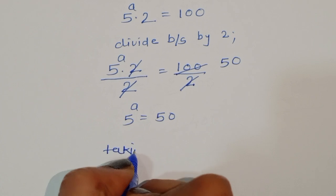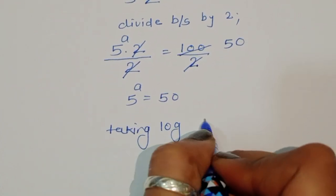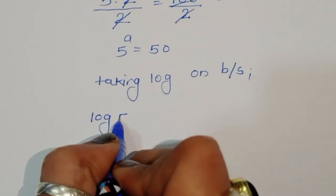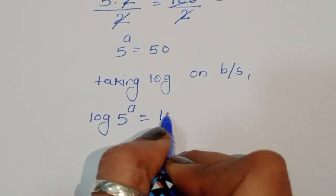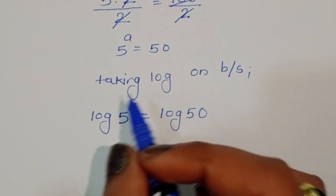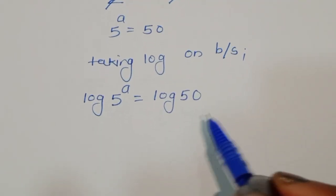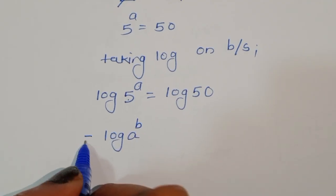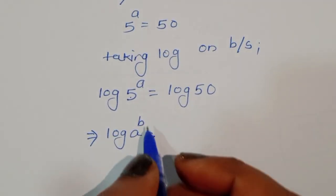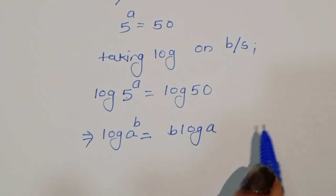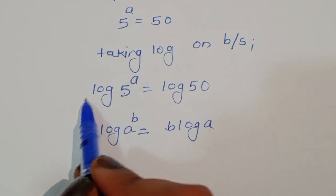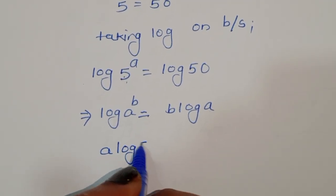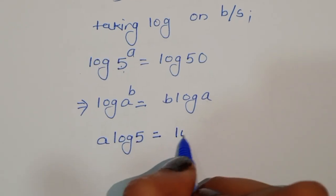Now we have to find the value of a, so we are using the log method — taking log on both sides. We get log of 5 power a is equal to log of 50. Using the formula log of a power b equals b times log of a, we write: a log of 5 is equal to log of 50.